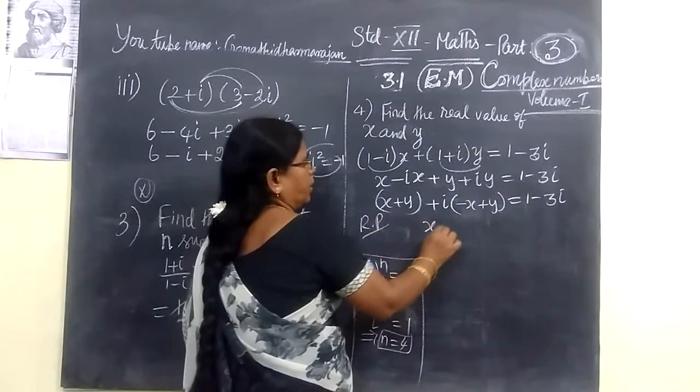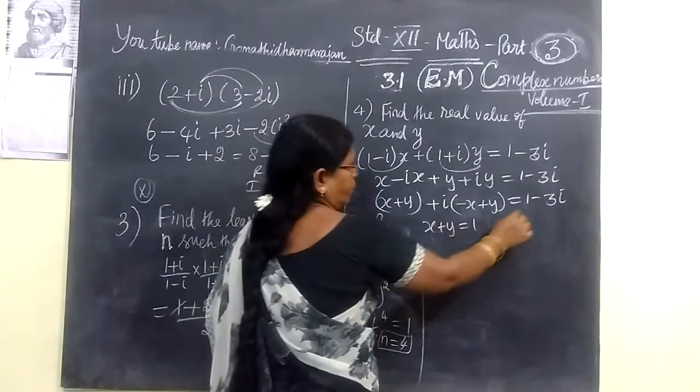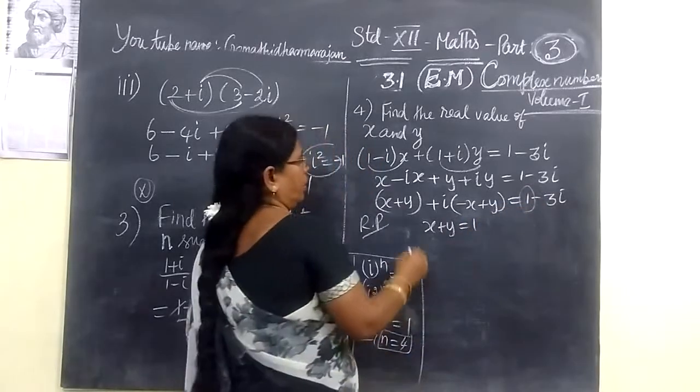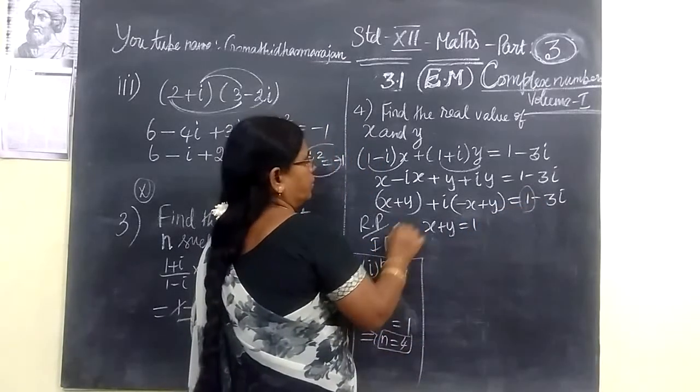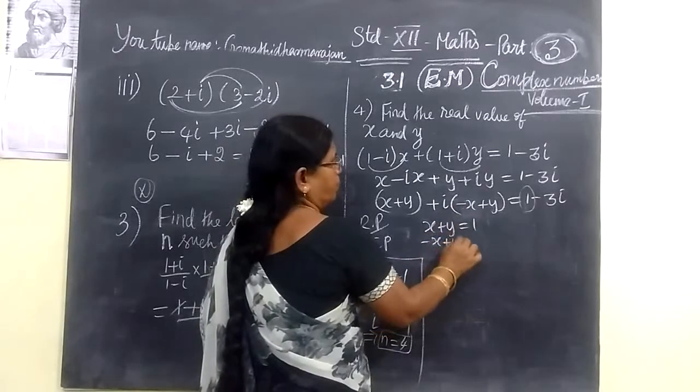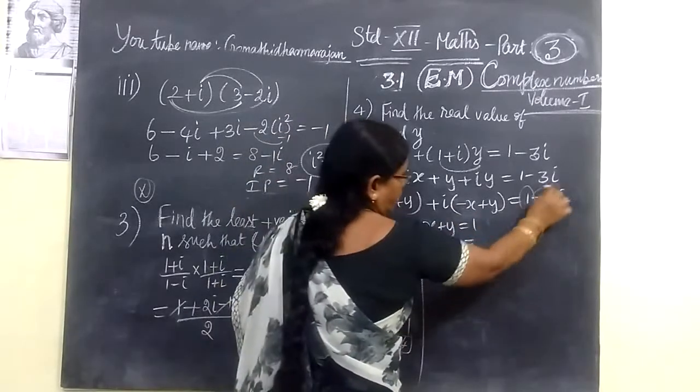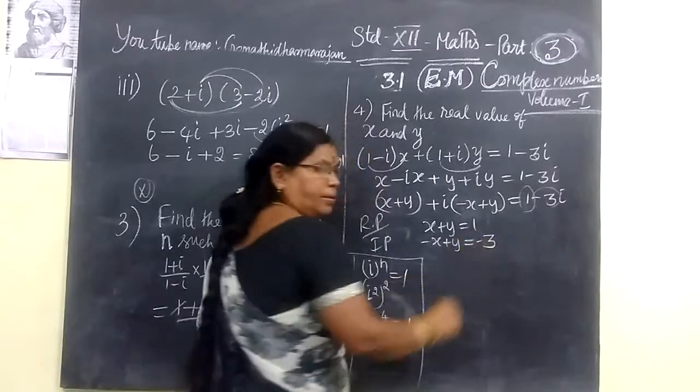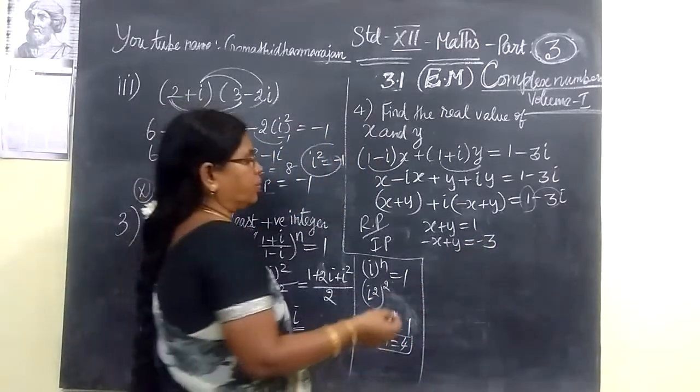Now it equals real part. This equals real part. x + y equal to, it will be real part test, 1. And it equals imaginary part. Here imaginary part is -x + y. Here imaginary part is nothing but minus 3. Minus sign on the test.